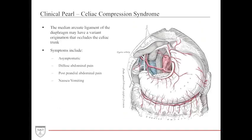The first clinical pearl is celiac compression syndrome. There is an important fibrous structure called the median arcuate ligament — a fascial sling that wraps around the diaphragm as the abdominal aorta enters the abdominal cavity. If this fascial sling is positioned too low, it can compress the celiac trunk. Symptoms can be variable: it may be asymptomatic, but can also include diffuse abdominal pain, postprandial pain after consuming food, or nausea and vomiting.